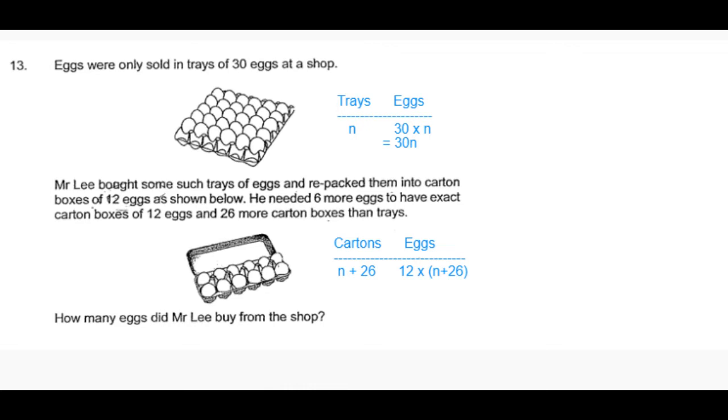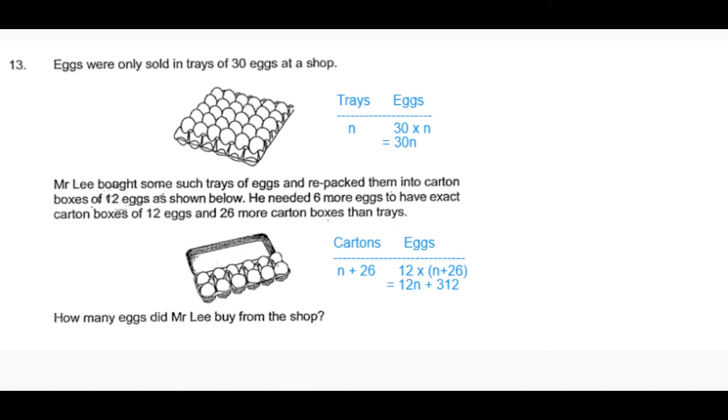When we expand 12 times n plus 26, it becomes 12 times n plus 12 times 26, which is 312.